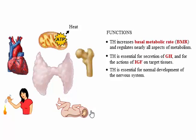Thyroid hormone is essential for normal development of the nervous system. Absence of thyroid hormones during the fetal period and immediate postnatal months produces a form of mental retardation called cretinism. If babies who lack thyroid hormone are treated immediately postnatally, the condition can be prevented. If babies are untreated, the condition is permanent and irreversible.